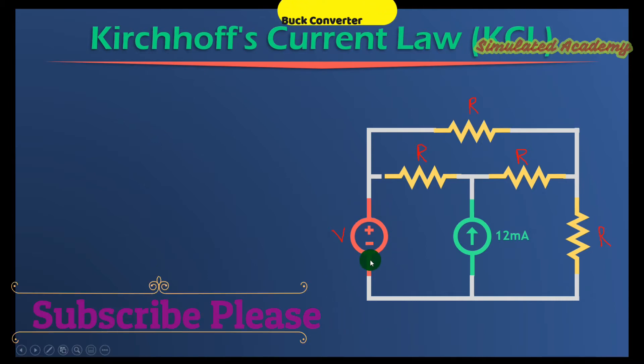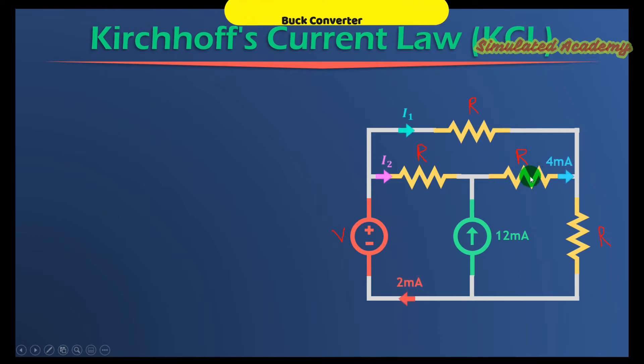We are also given that this resistor passes a current of 4 mA and the current through this loop is 2 mA. This voltage source generates a current of 12 mA. This current is I2 passing through this resistor and I1 current is passing through this resistor. I call this node A and this node B.